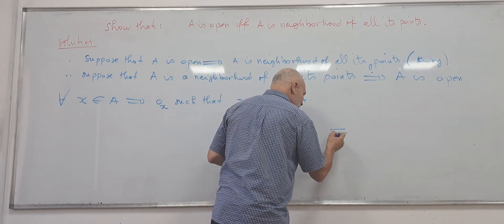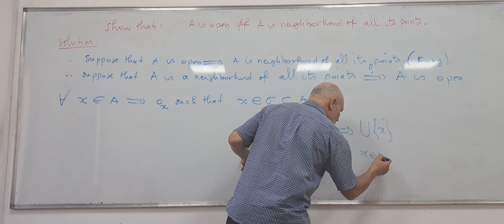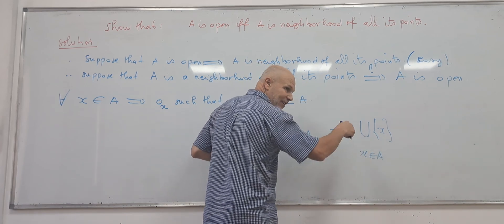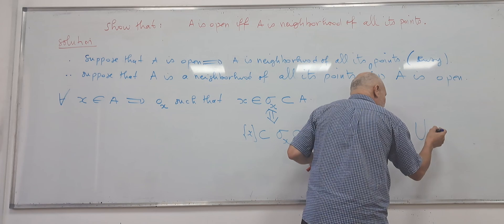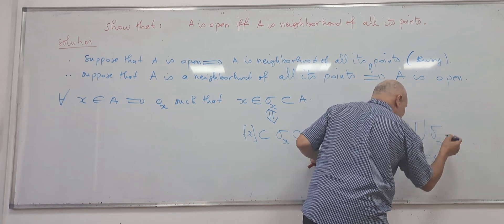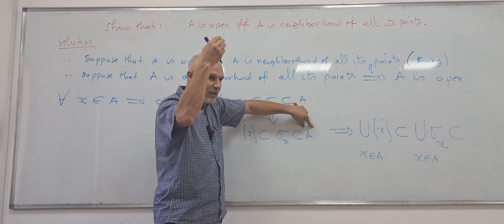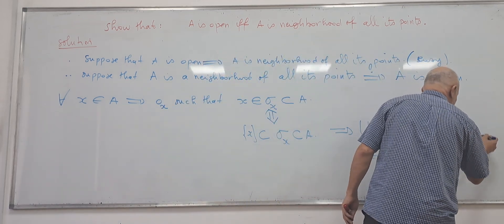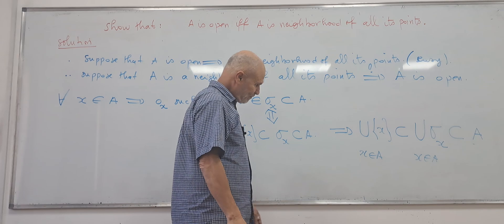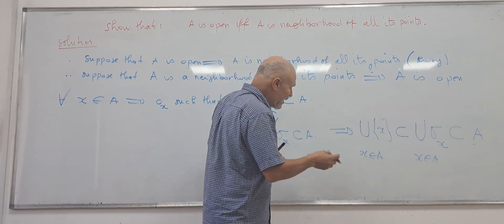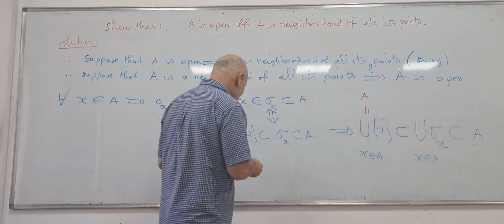And from this formula, we can deduce that the union on X, X belongs to A, and this is the smooth tricky is here, X belongs to A. This is included in the union of all X, X belongs to A, and this is the biggest set. So if we take union, it will be the same A. Therefore, you can smartly remark that this union is actually A.